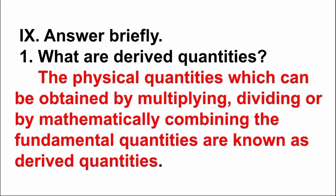Question 1, answer briefly. What are derived quantities? Answer: The physical quantities which can be obtained by multiplying, dividing, or by mathematically combining the fundamental quantities are known as derived quantities.